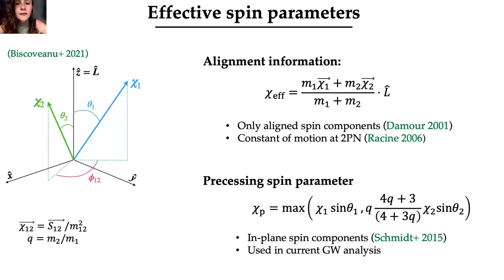At the leading post-Newtonian order, the influence of the individual black hole spins can be described by two effective parameters, which are χ-effective and χp. χ-effective quantifies the projection of the two individual black hole spins χ1 and χ2 onto the orbital angular momentum L, while the precessing spin parameter χp tracks the amount of relativistic precession. It was originally introduced for waveform modeling, but is now currently used in gravitational wave data analysis, and it takes the maximum between these two expressions, which are the projection onto the orbital plane of the two individual black hole spins. Here, θ1 and θ2 are the tilt angles between the spins and the orbital angular momentum L.